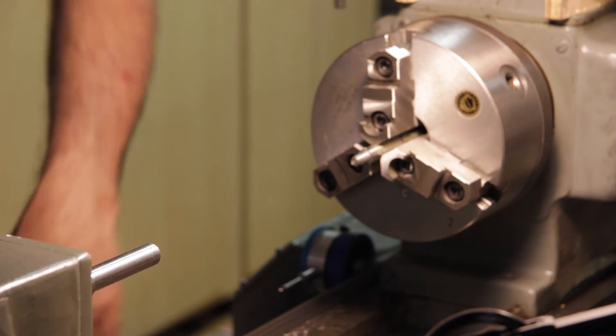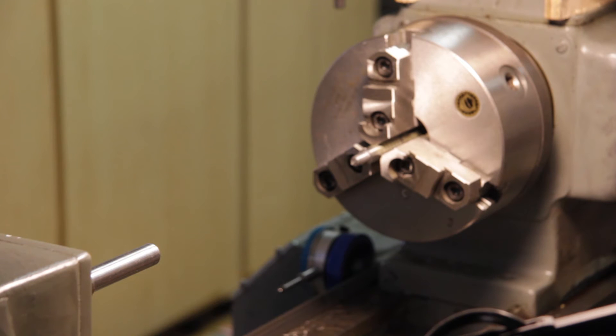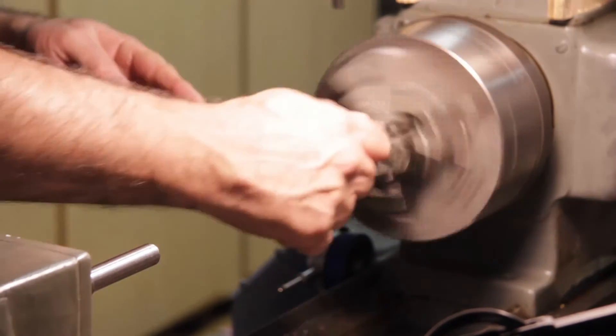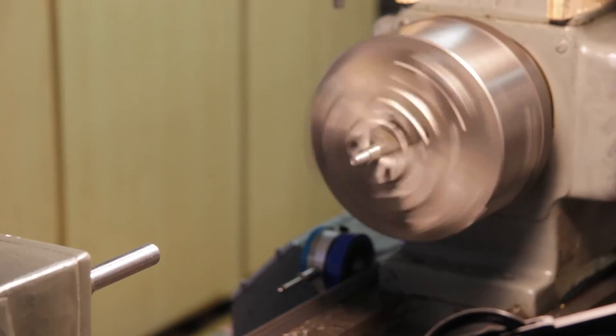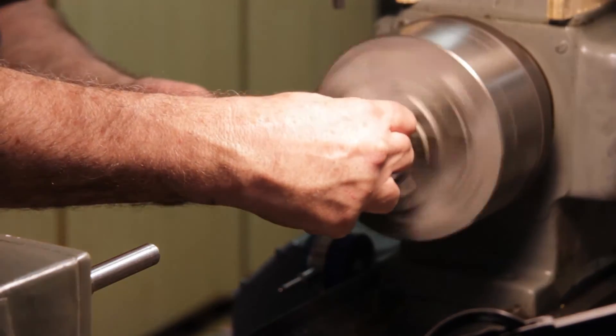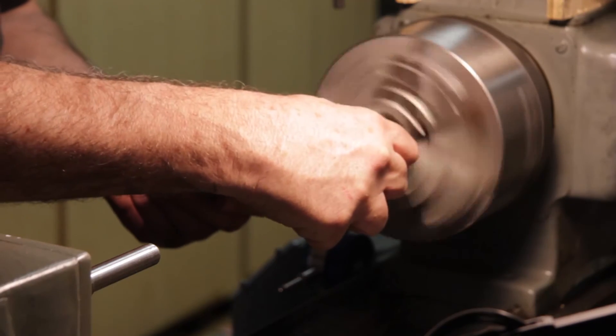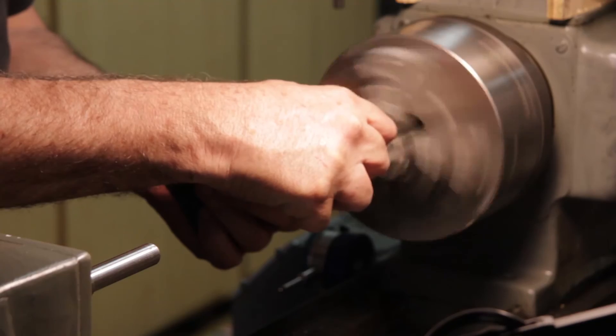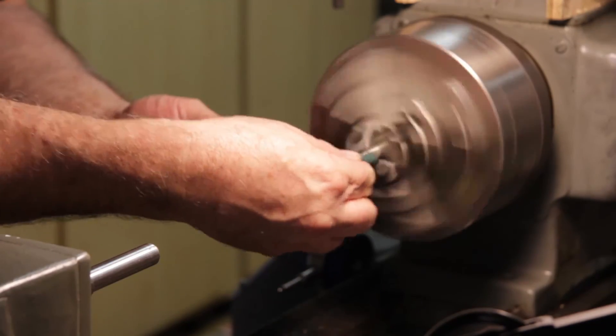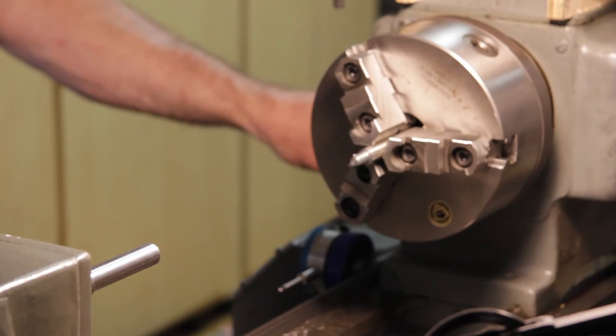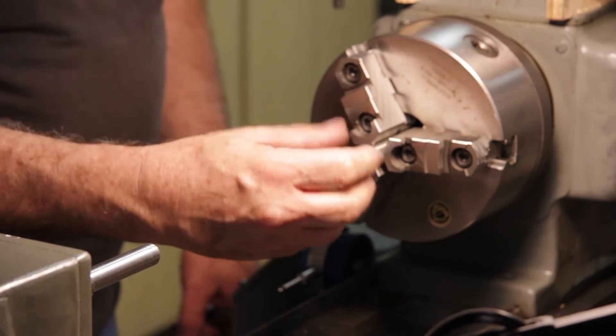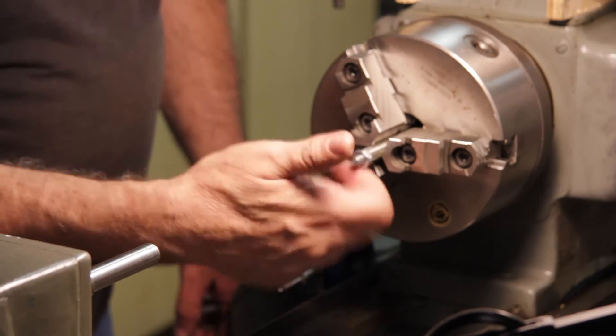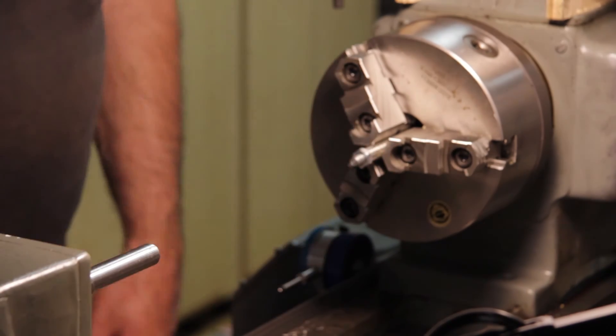Let's take and get a small file and touch up the threads with the file and then we'll touch it up with a little scotch-brite and let's take our test nut. Perfect amount of play and let's pull this out of the lathe.